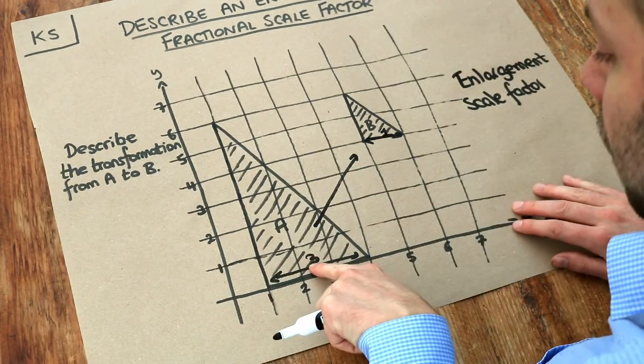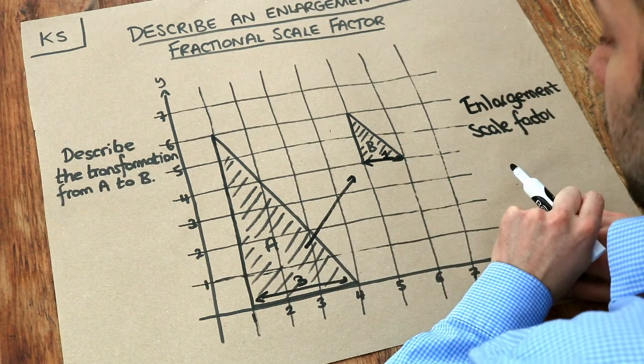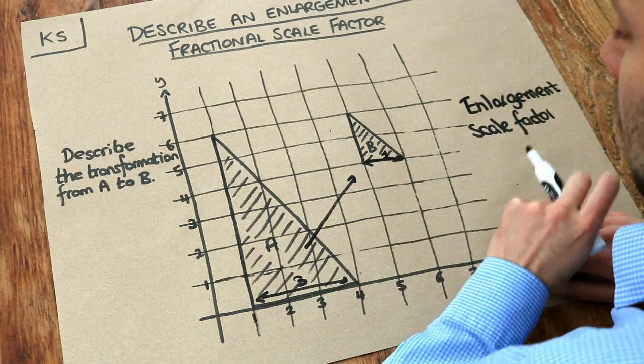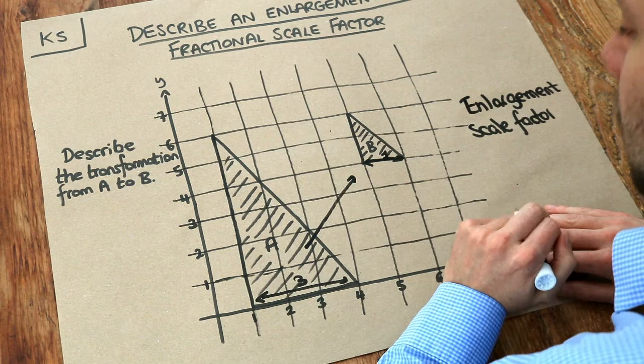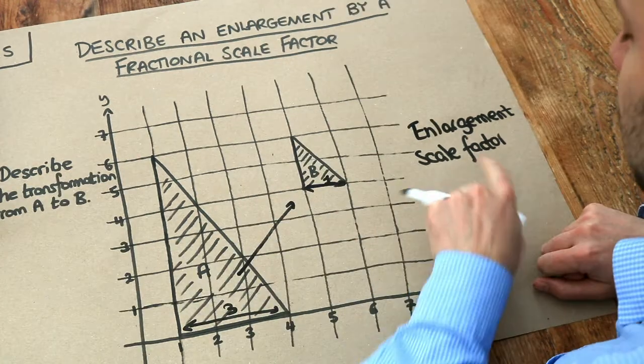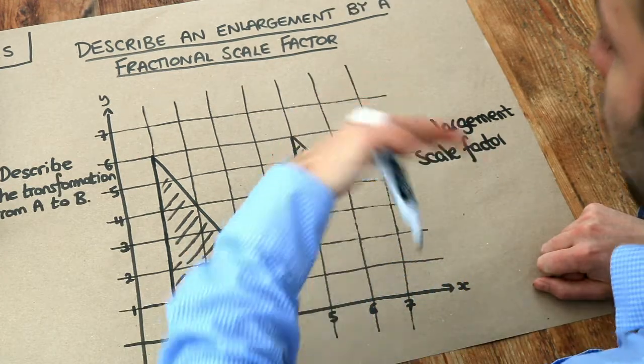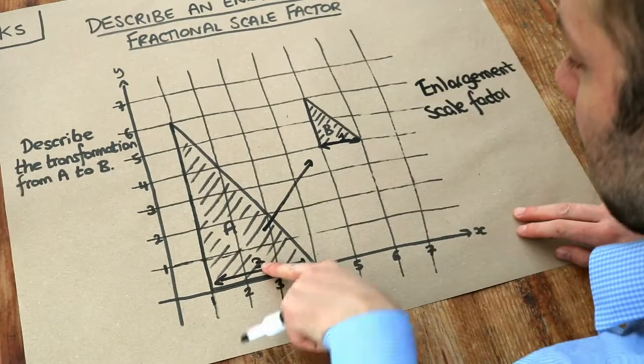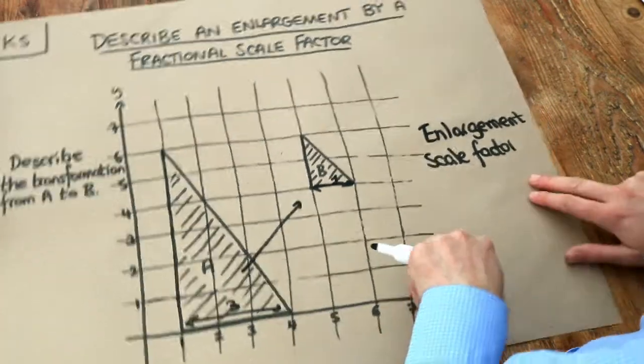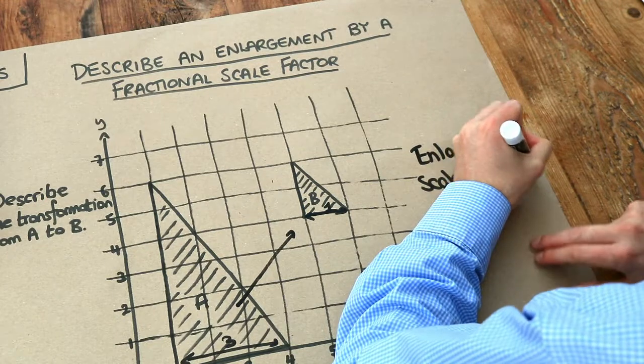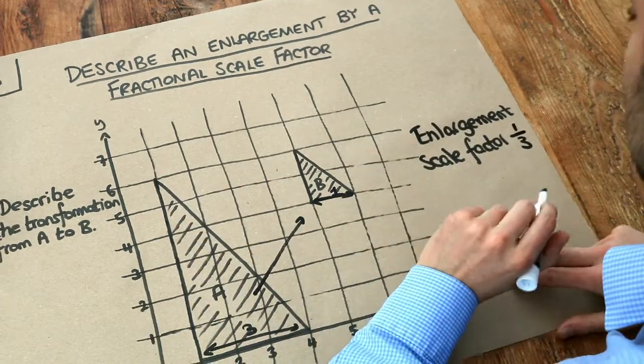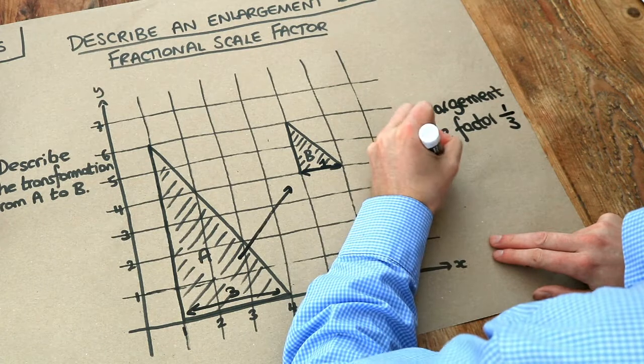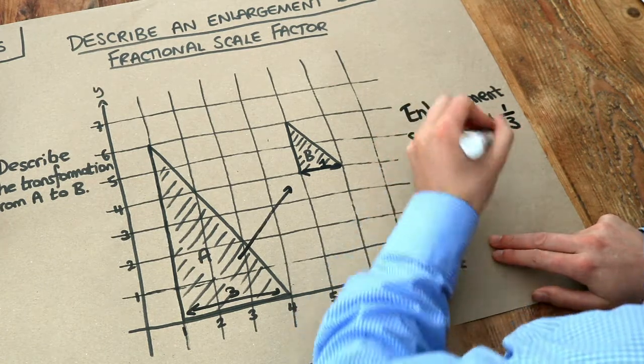So what do you do to three to get to one? We multiply it by a third. You could say we're dividing it by three, but we need to express scale factors as what we're multiplying by, what we're scaling it by. So to get from three to one we're timesing by a third, therefore the scale factor is a third. That's saying it's a third as big, it's going to be smaller. And then remember we also need to say the centre of enlargement.